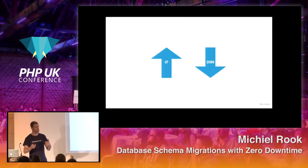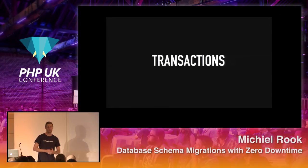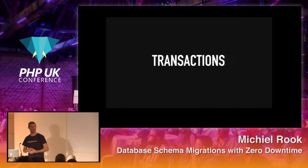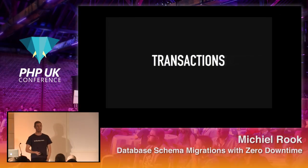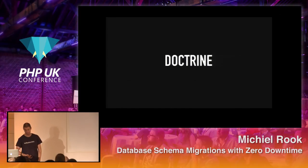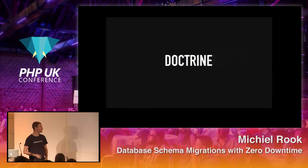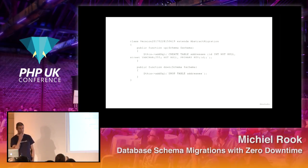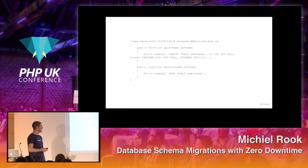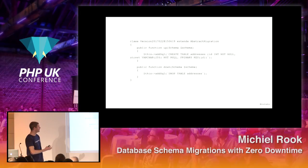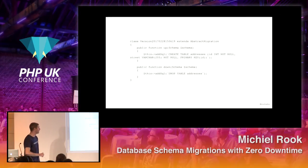Typically these migrations are run in transactions within MySQL or Oracle or what have you. A typical example tool in the PHP world is Doctrine. When you write a migration in Doctrine, it's basically PHP code — a simple class that extends an abstract migration base class, with two methods: up and down. The up method has SQL to modify things in the forward direction, and the down method, if applicable, has SQL statements to modify things in the backwards direction.